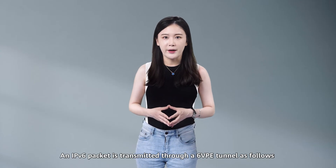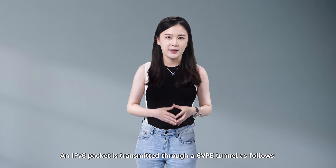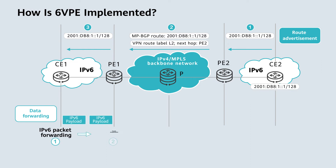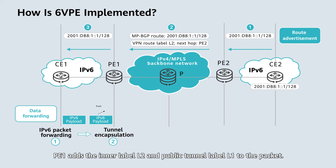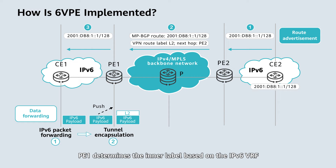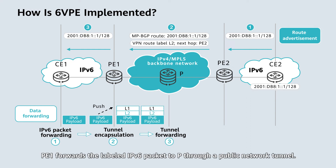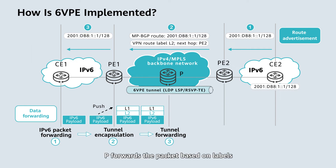An IPv6 packet is transmitted through a 6VPE tunnel as follows. Step 1: CE2 sends an IPv6 packet to PE1. Step 2: upon receipt of the IPv6 packet, PE1 adds the inner label L2 and public tunnel label L1 to the packet. PE1 determines the inner label based on the IPv6 VRF and the public tunnel label based on IPv4 address information. Step 3: PE1 forwards the labeled IPv6 packet to PE2 through a public network tunnel, forwarding the packet based on labels and unaware of the inner IPv6 payload.